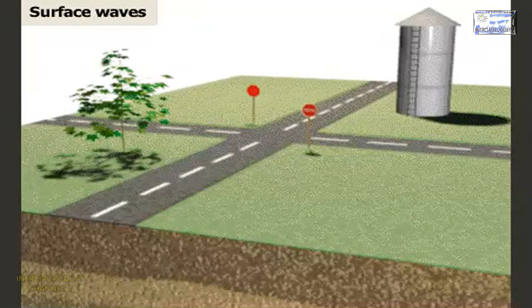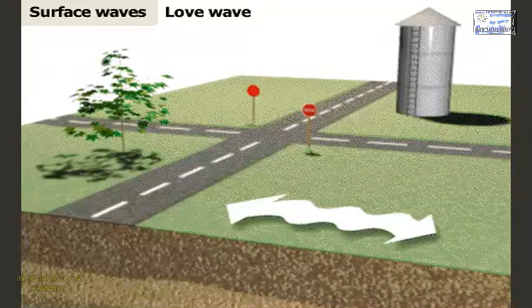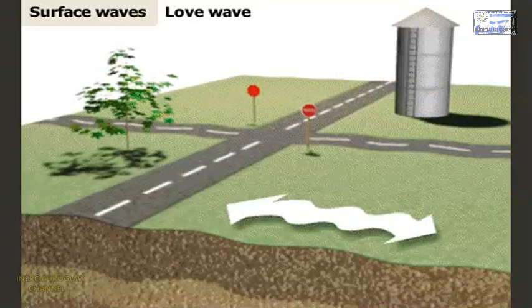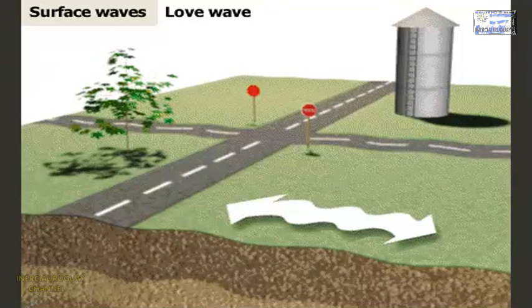There are two types of surface waves. A love wave causes side to side motion perpendicular to its direction of travel. It can cause damage by breaking roads and pipes.